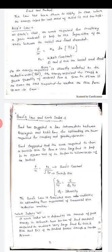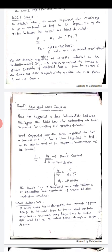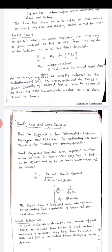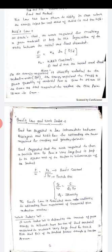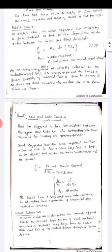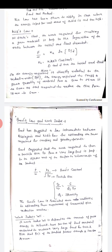Next one is Kick's law. Kick's law states that the work required for crushing a given material is proportional to the logarithm. Means in Rittinger it was simply proportional and in this it was proportional to the logarithm of the initial and the final diameter. Again, initial one is bigger and final one is smaller. So we are representing initial by the capital D and the final by the small d. So according to Kick's law, P upon M dot will be equal to KK ln of D upon small d.